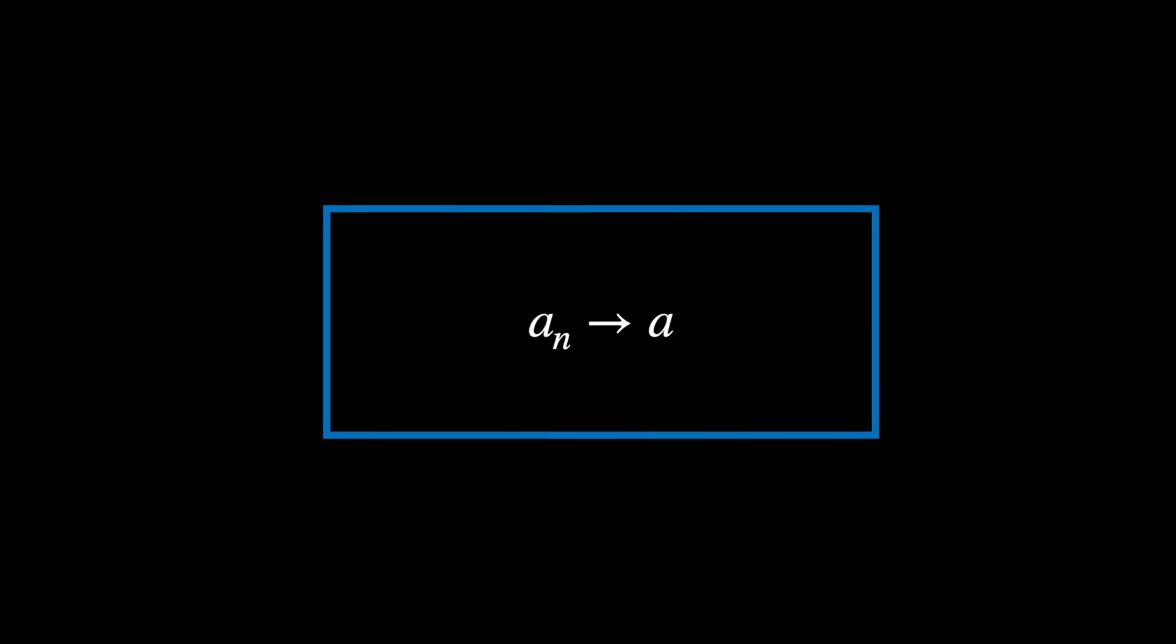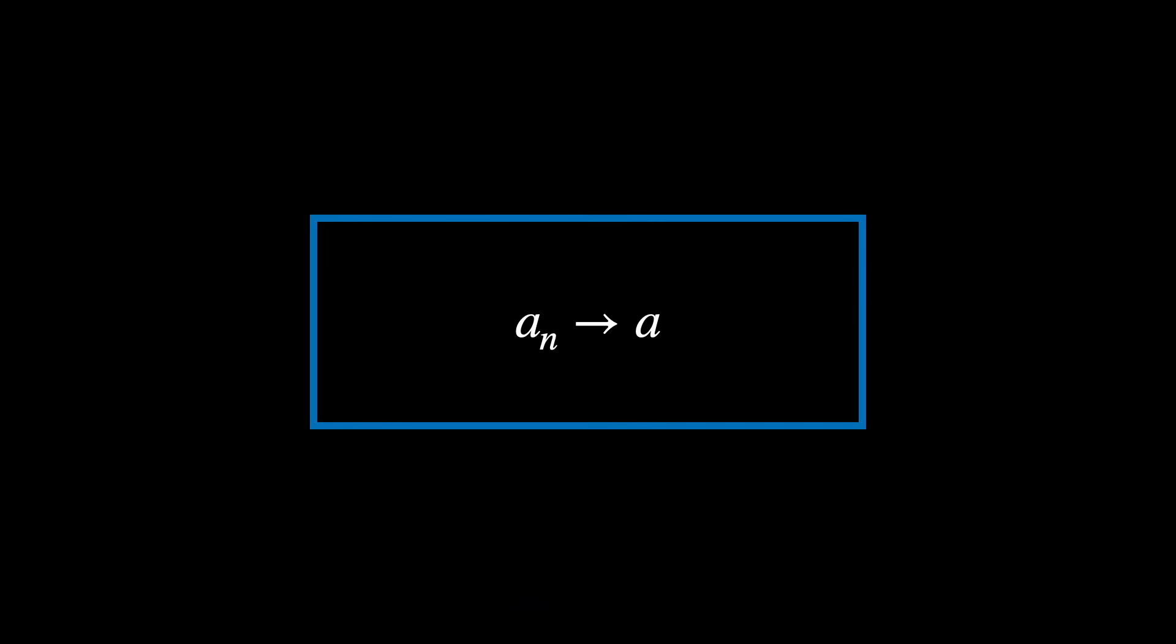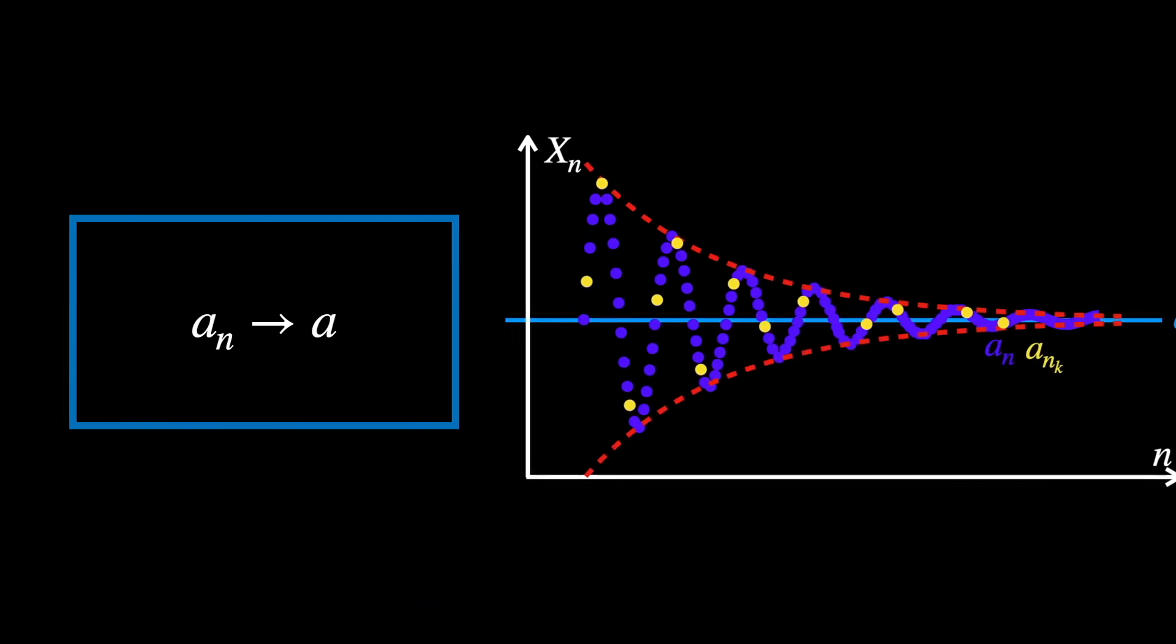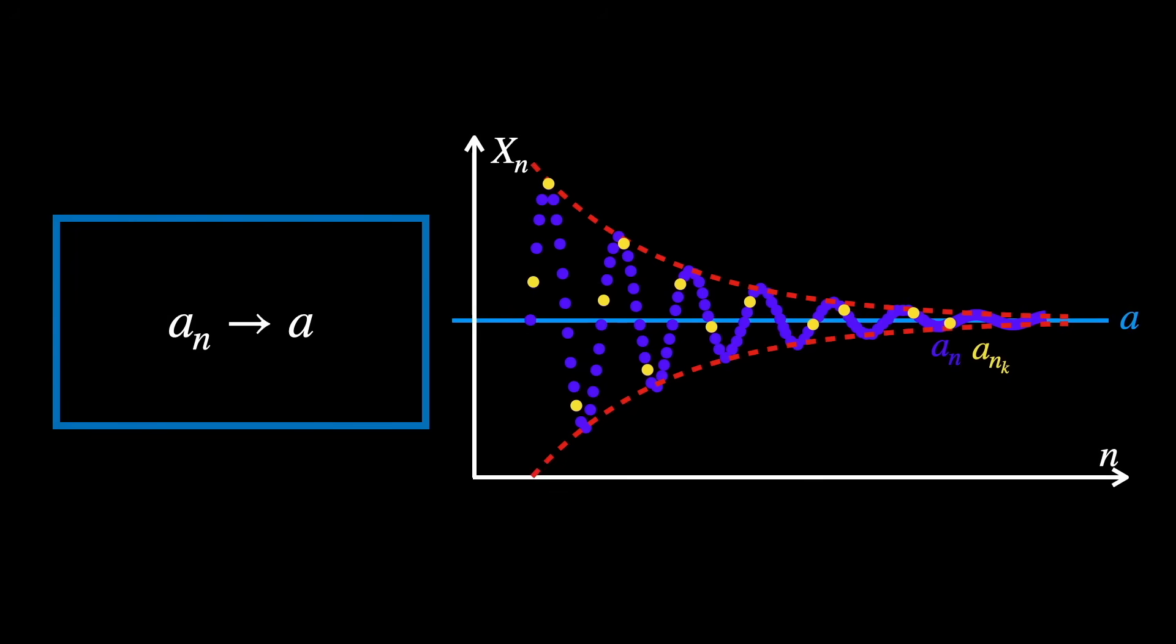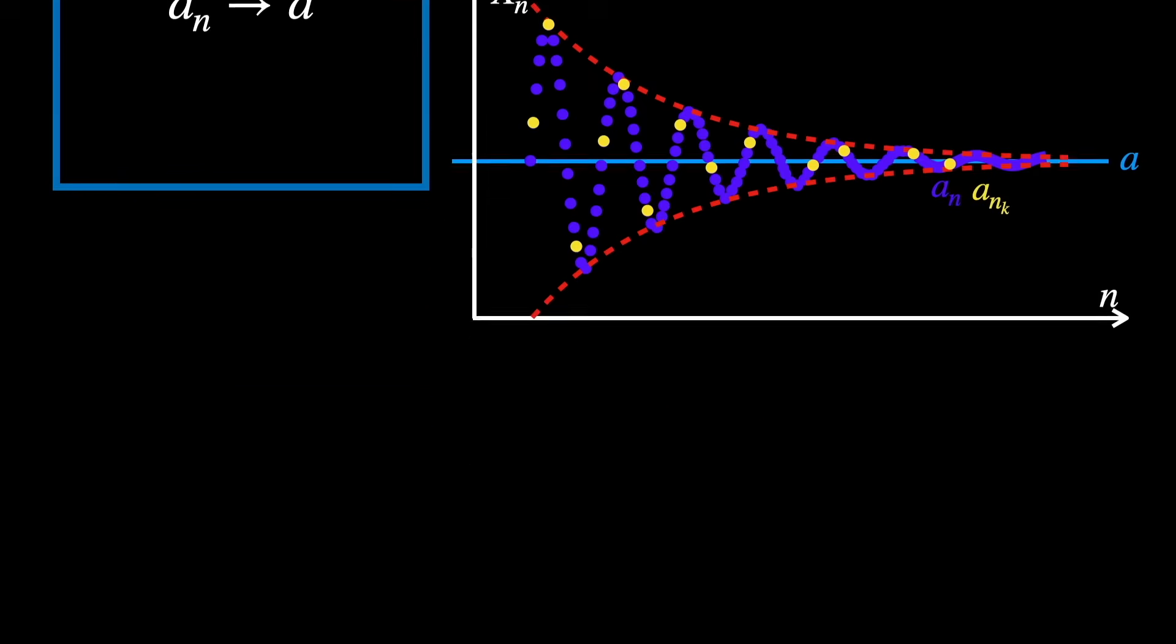Now we have to continue to expand and show that a_n tends to a. Or in other words, that the terms of the sequence get closer and closer to a. Here we need to get used to this definition.